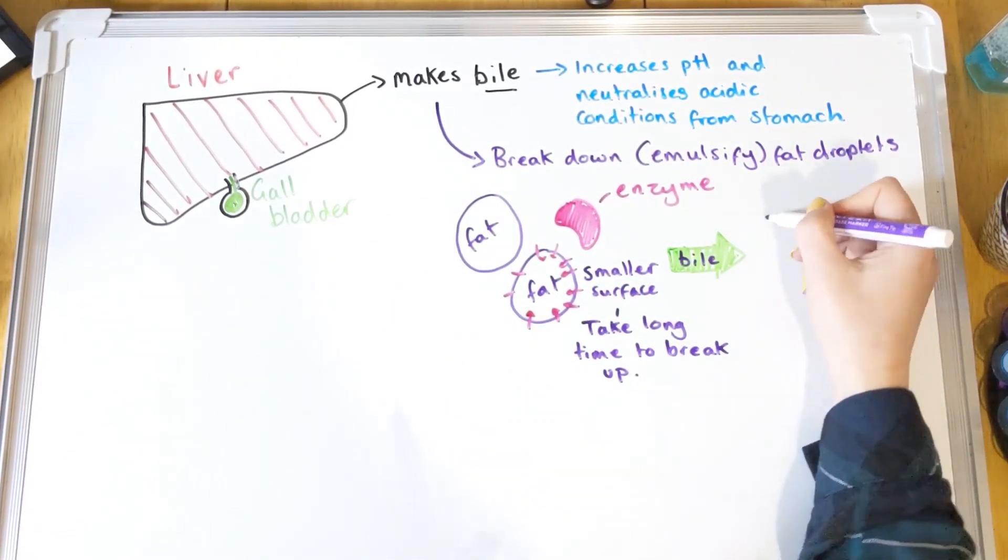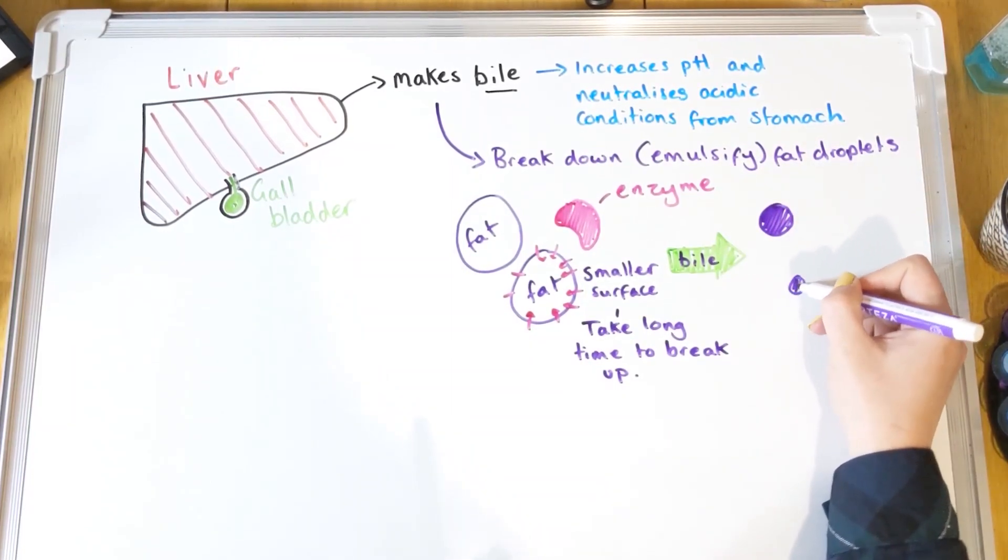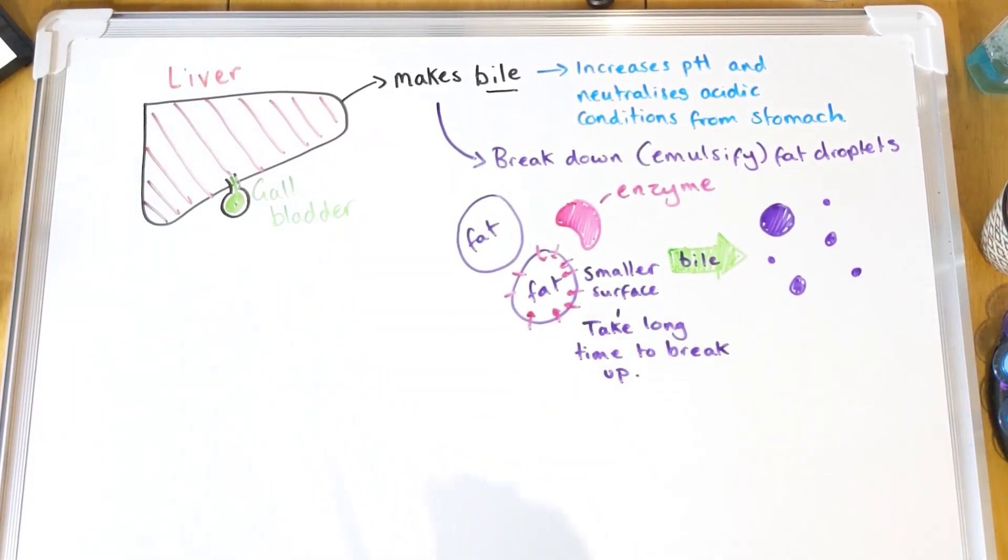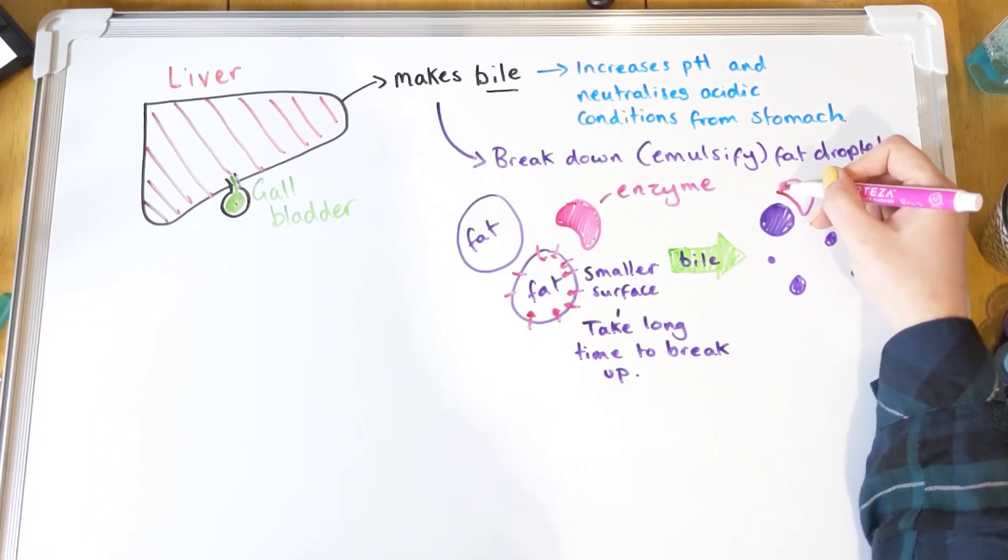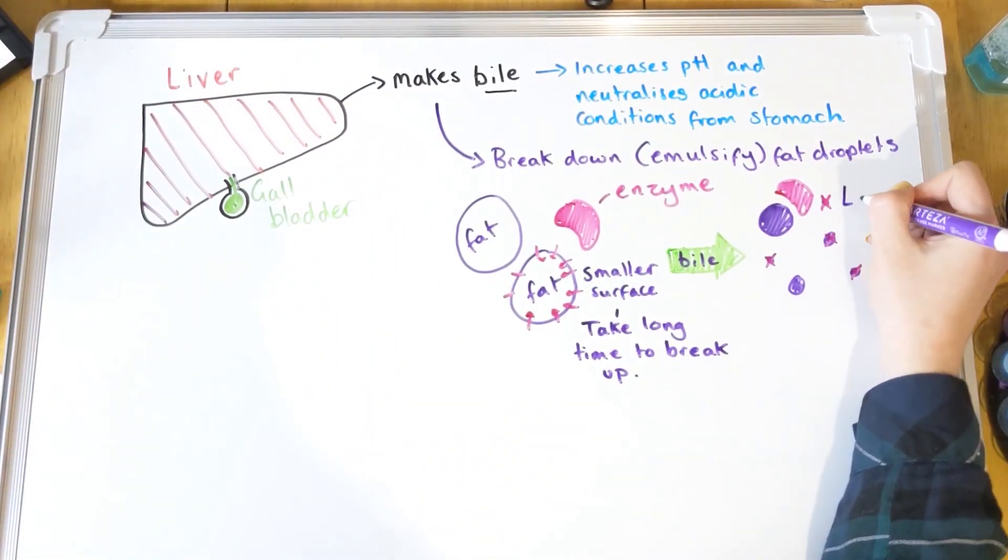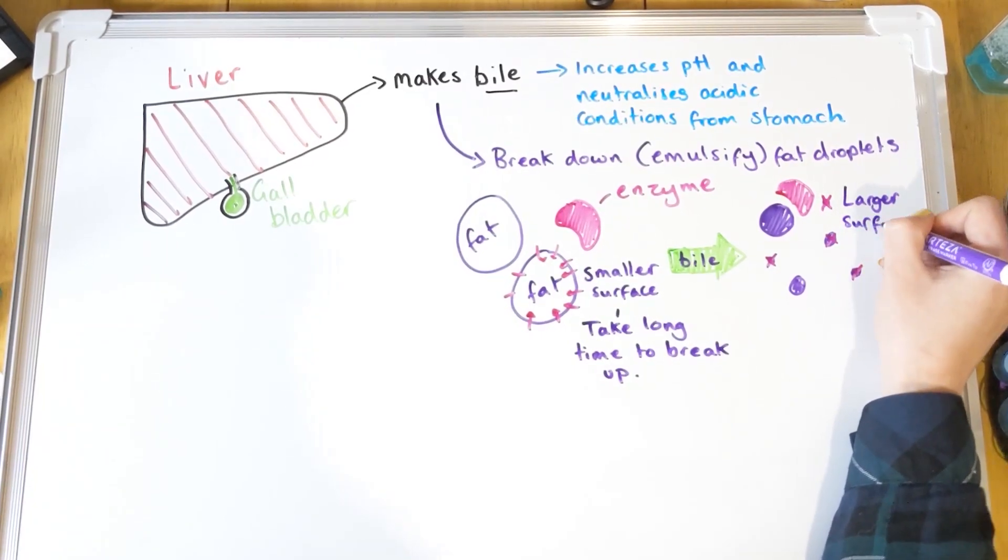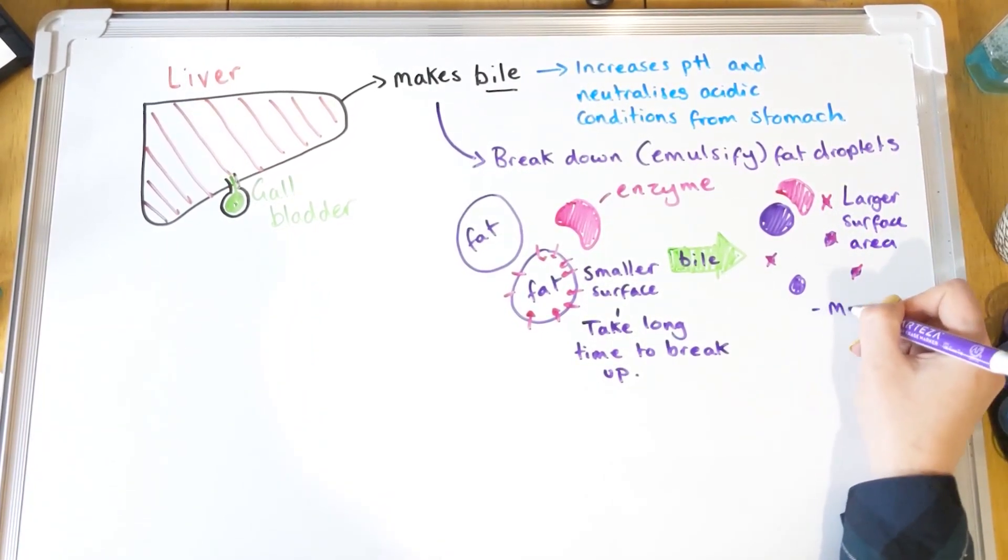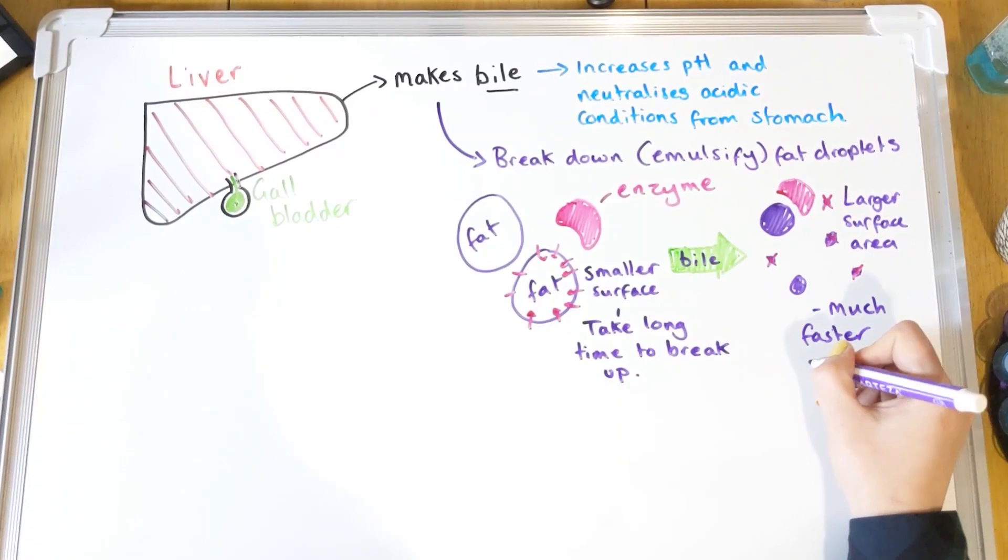So what bile does is it forces that fat droplet to break apart into smaller little droplets, which are much easier for enzymes to then digest. They've got a big surface area, so it takes less time or less points of attack to break it down. So in terms of exams, you just need to know that bile emulsifies, breaks down fat droplets to make them easier to absorb or easier to digest.